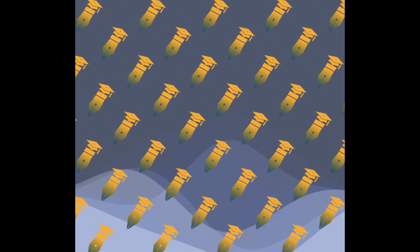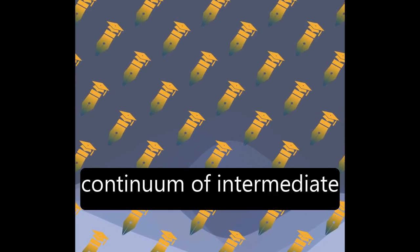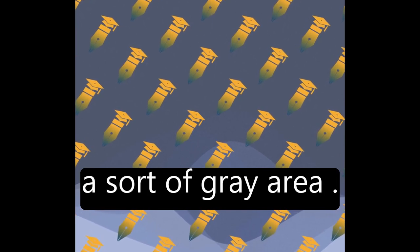In between these two extremes, there is a continuum of intermediate trajectories representing a sort of gray area.